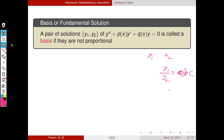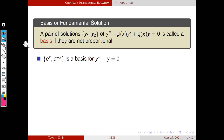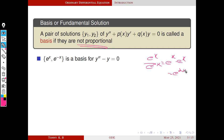For example, we know that e raised to x and e raised to minus x form a basis for y double dash minus y equals zero — both satisfy the differential equation. We check proportionality: e raised to x divided by e raised to minus x equals e raised to 2x, which is not a constant number. So this pair is a basis for this differential equation because they are solutions and they are not proportional — one is not a multiple of the other.